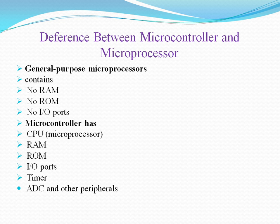Now let us discuss some of the differences between a microcontroller and a microprocessor. A microcontroller has various components built in — it has a CPU, RAM, ROM, ports, timers, ADC, and other interfacing inbuilt in it.